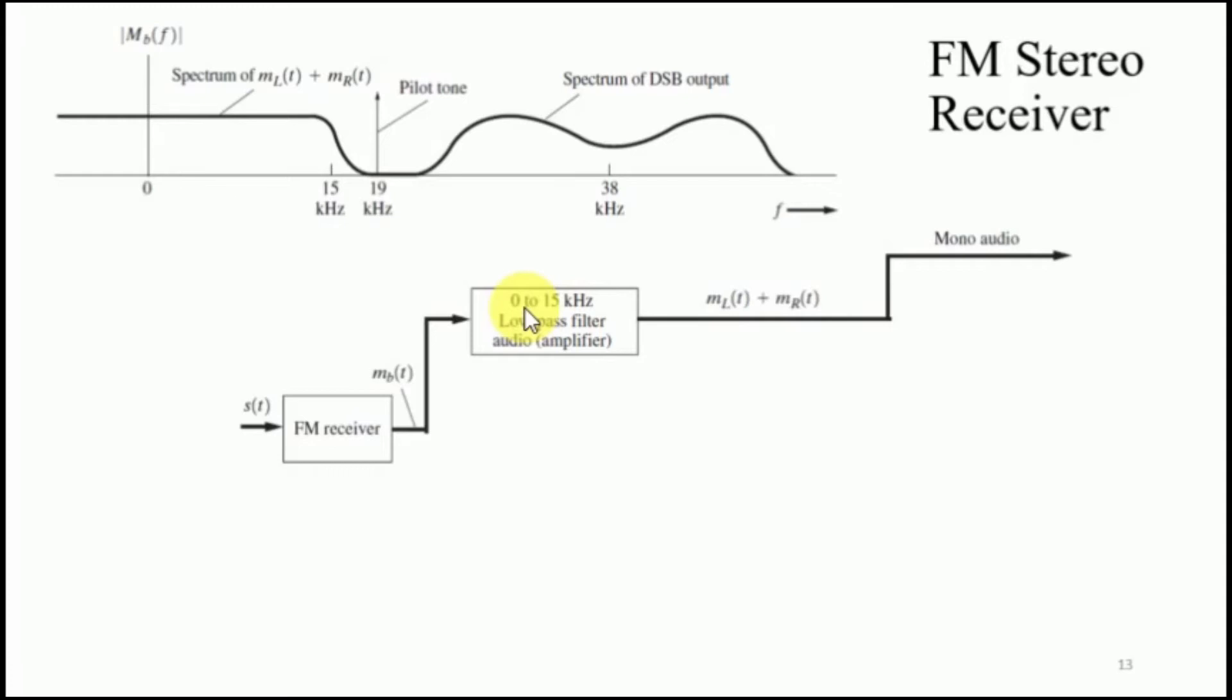If we have an audio which is mono and not stereo, the first part of the spectrum that corresponds to the addition of left and right channels is sufficient. We would pass it through a low pass filter and we will get ML of T plus MR of T and then this is fed to a speaker.